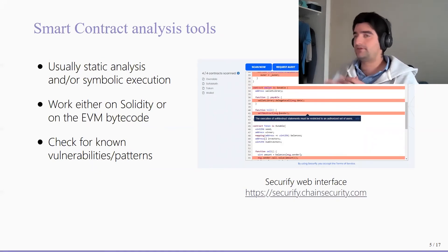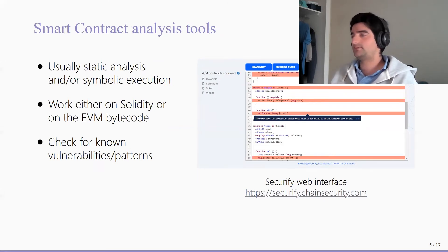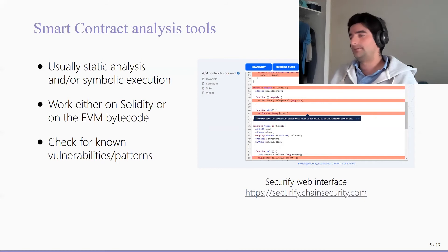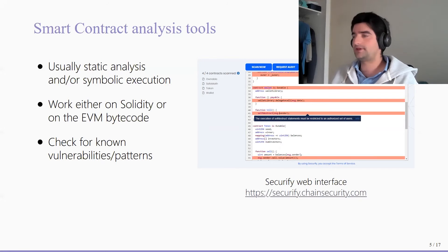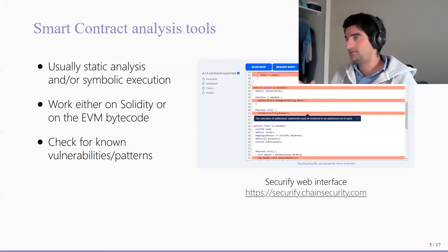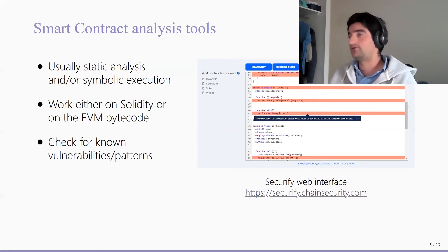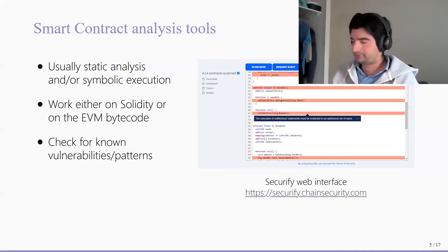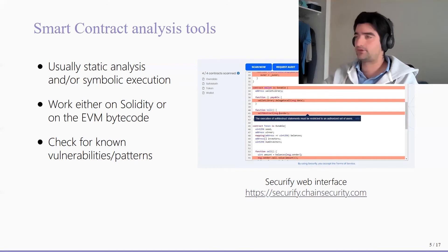To prevent all these bugs and help developers build safer contracts, a lot of tools have been developed. For example, a tool called Securify, developed two or three years ago, checks for most of these known vulnerability patterns — almost all of the ones presented previously. It has a nice UI that can tell someone, for example, that a kill function is not safe because anybody can call it, which would destroy the contract and send funds to the caller. This allows developers to check for all these potential issues and fix them before they become a real problem.